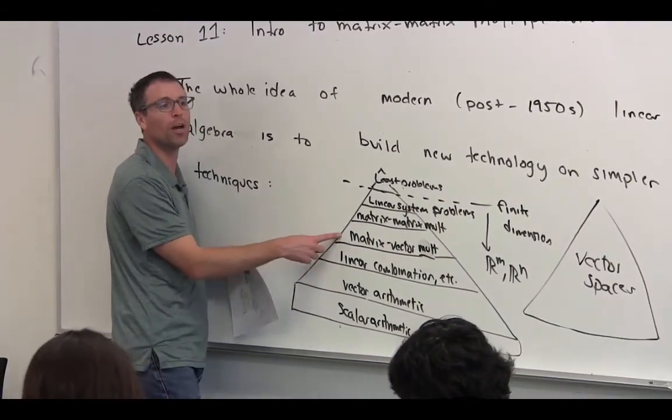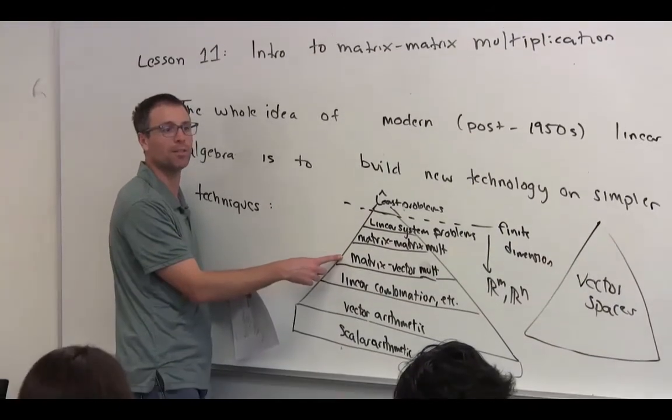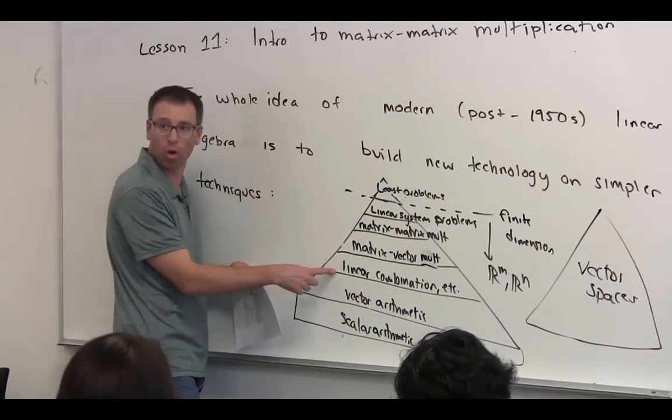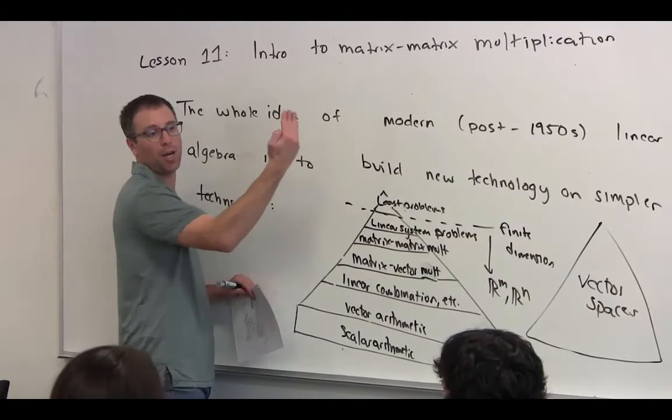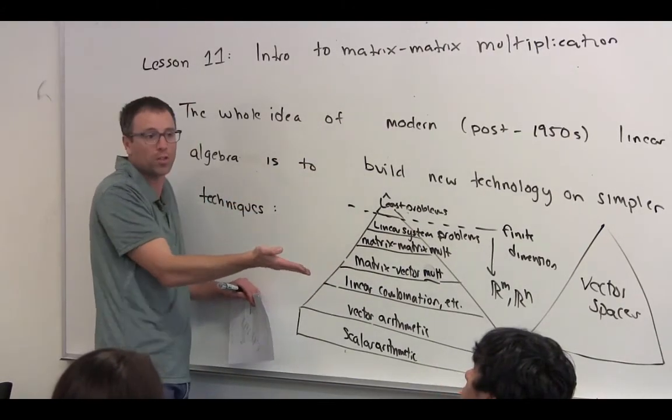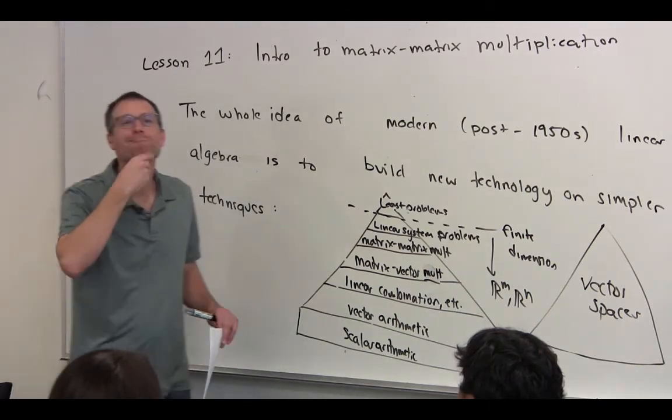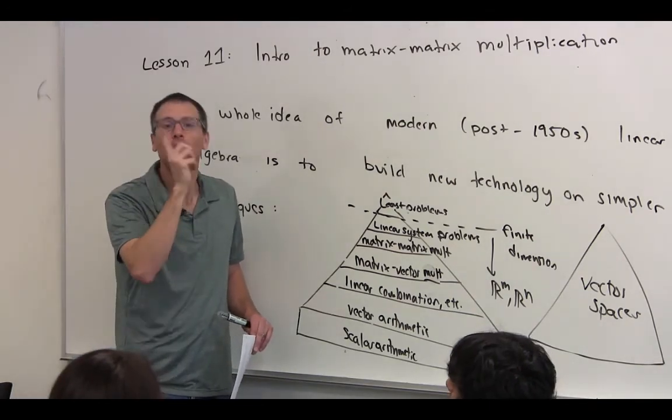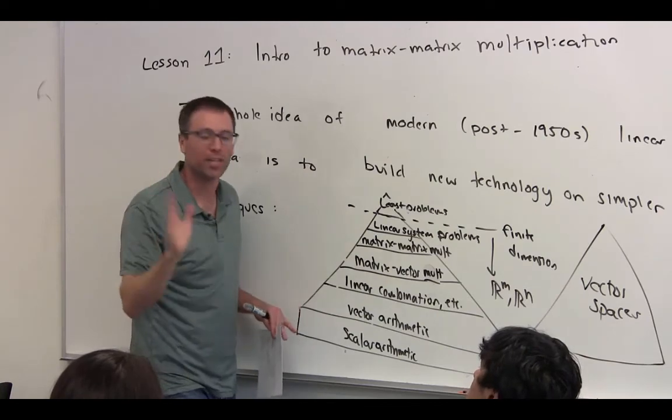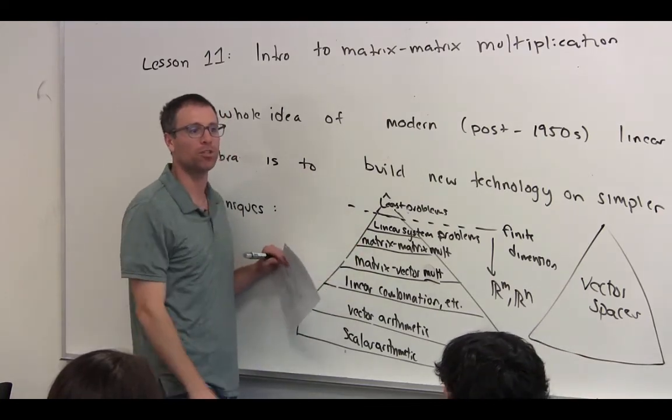How do we build matrix-vector multiplication? We allowed ourselves to do multiple linear combinations, either linear combinations of the columns or linear combinations of the rows, and then we just ordered it as such. So now I've got to have a beard and a pipe. Could you guess, could you make a wild guess, how we're going to construct matrix-matrix multiplication?